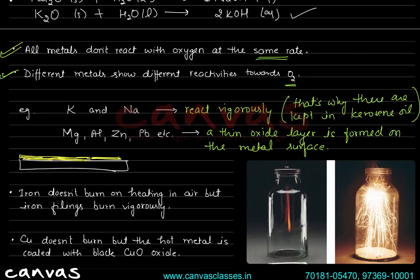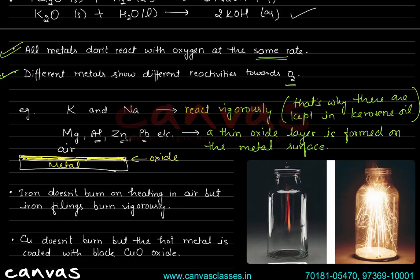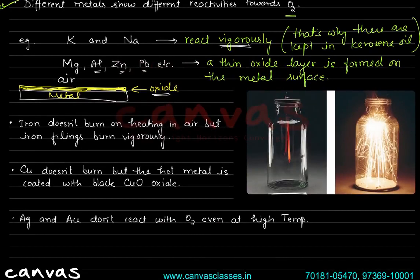For magnesium, aluminum, zinc, and lead, a thin oxide layer forms on the surface. Because of this oxide layer, the metal below is no longer in direct contact with air, so further reaction stops. This protective oxide layer prevents further oxidation.